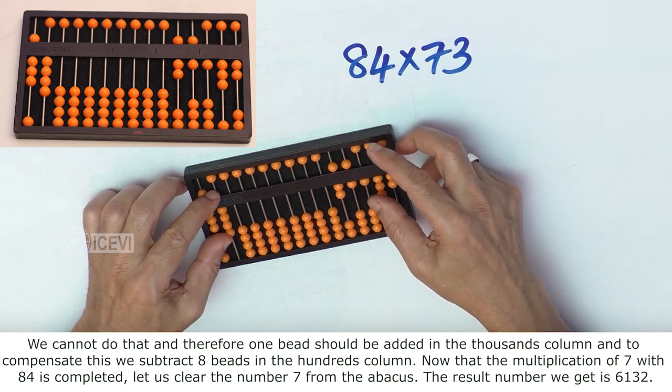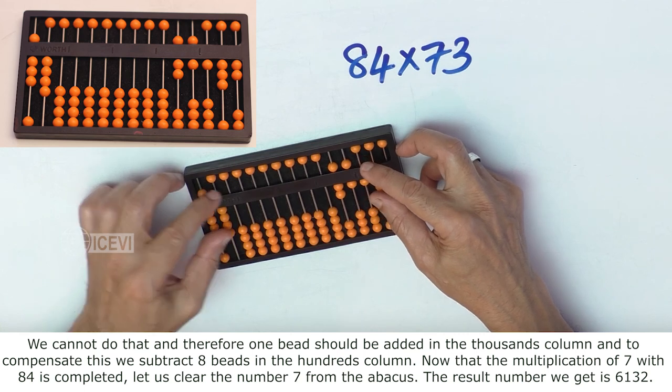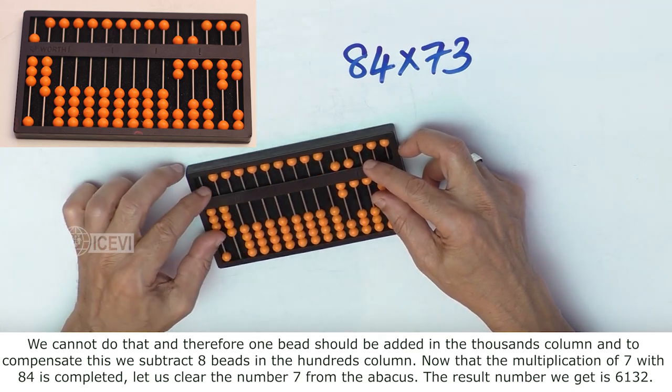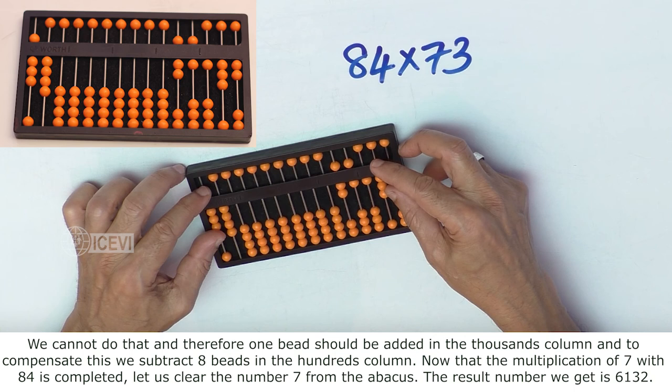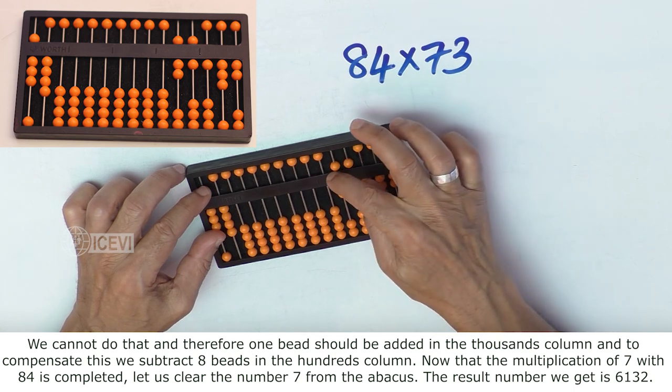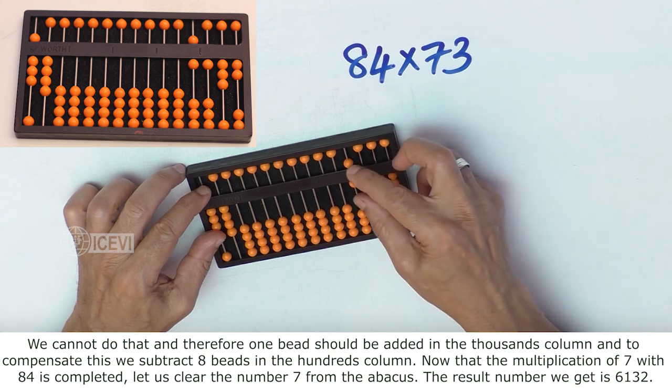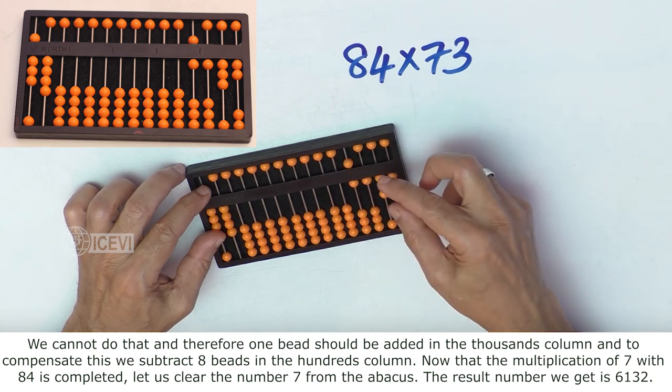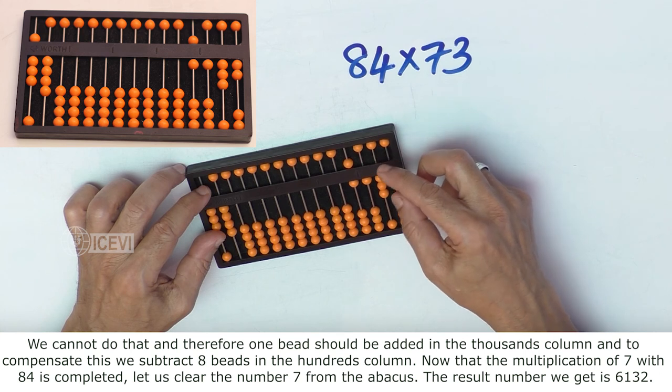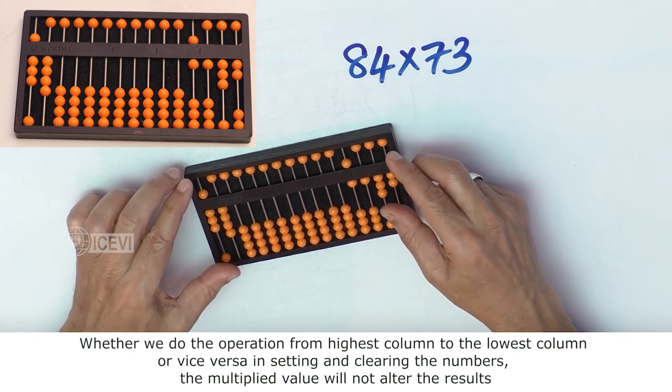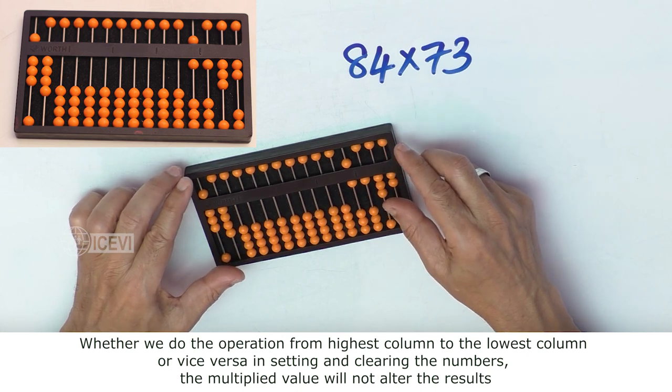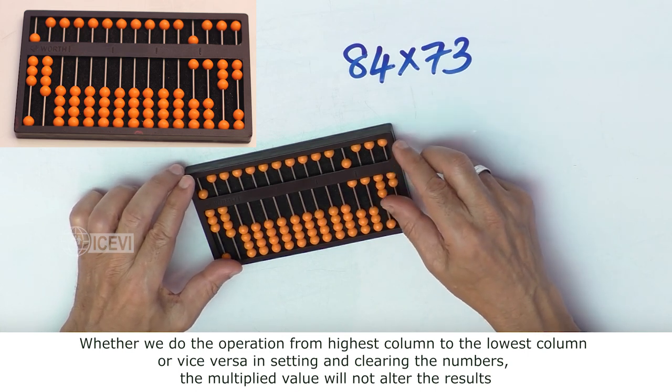Now the multiplication of 7 with 84 is completed. Let us clear 7 from the abacus. The result we get is 6132. That is 6132.